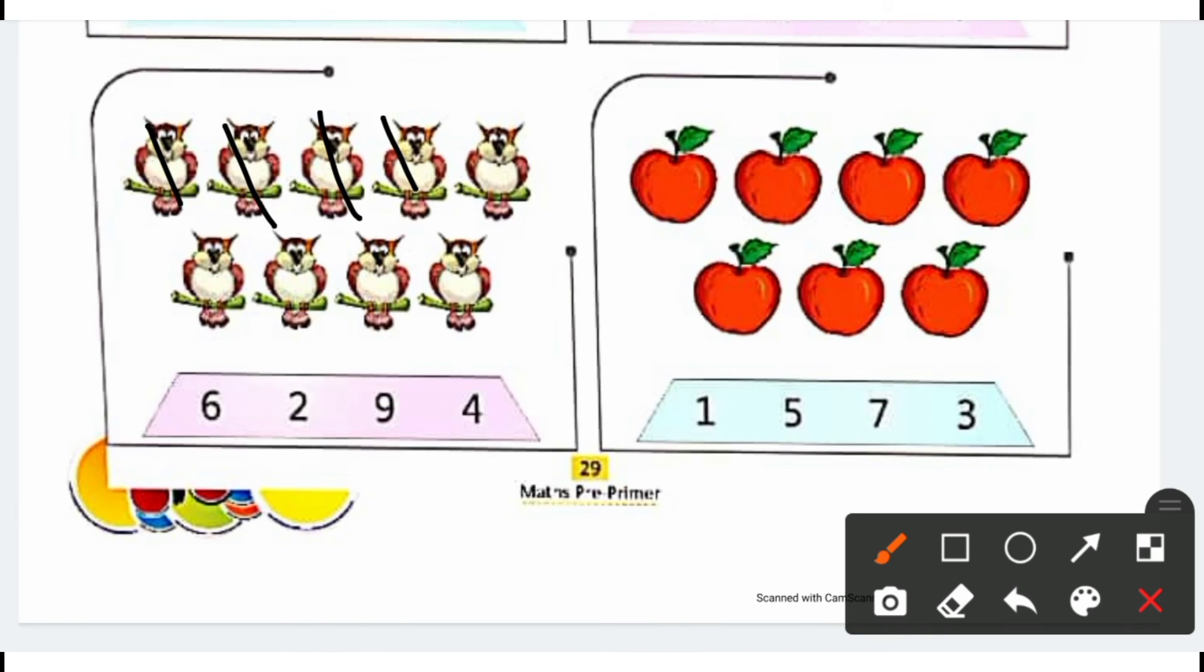1, 2, 3, 4, 5, 6, 7, 8, 9. So 9 ko circle kardou.